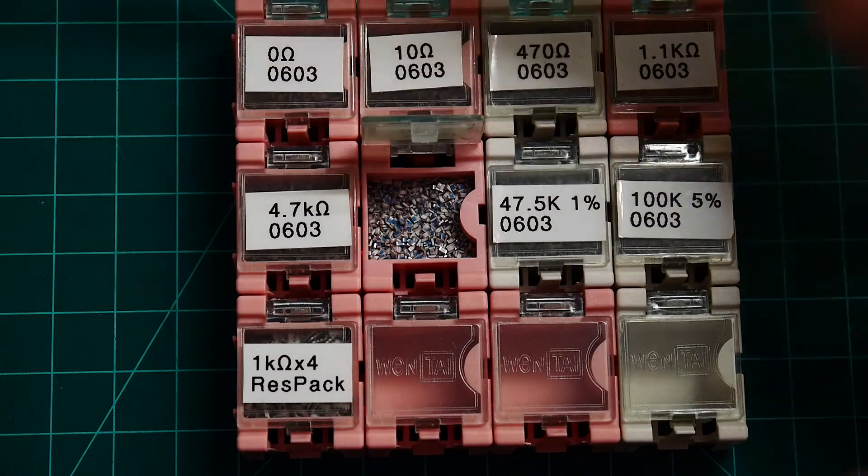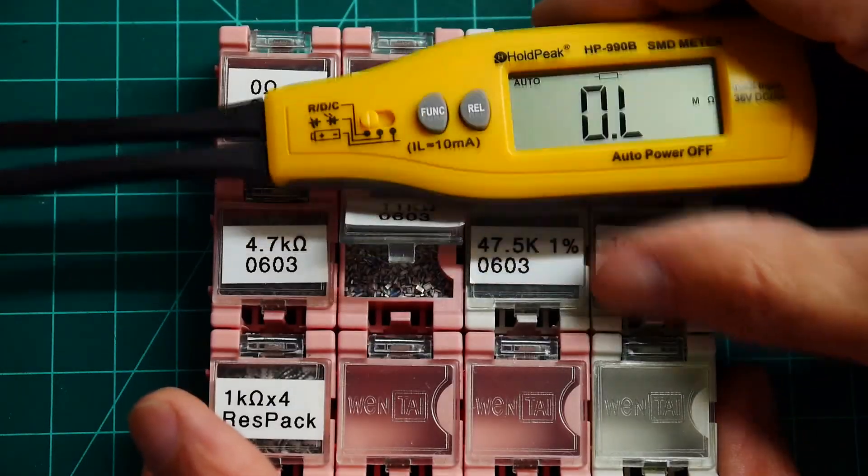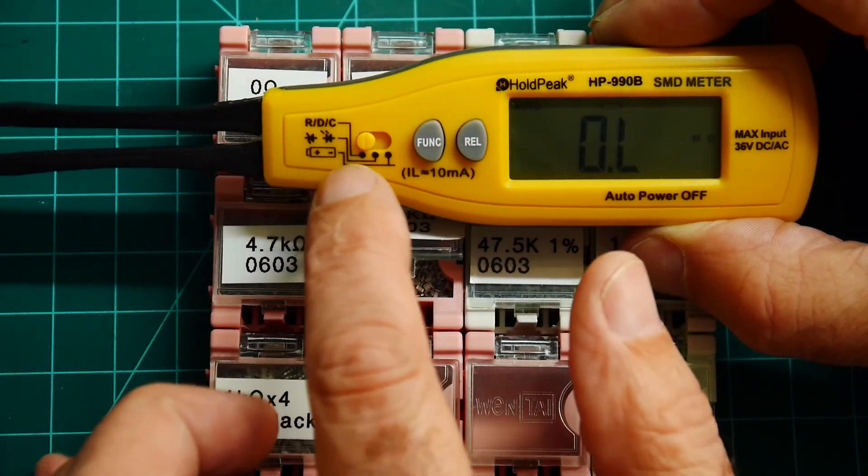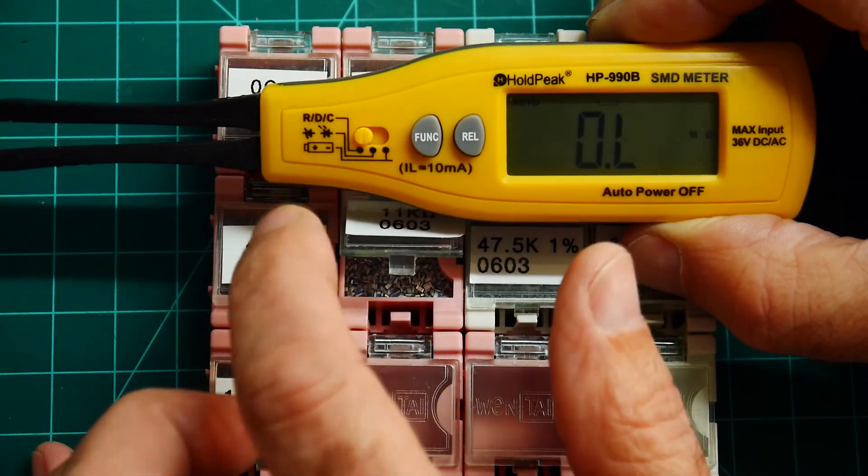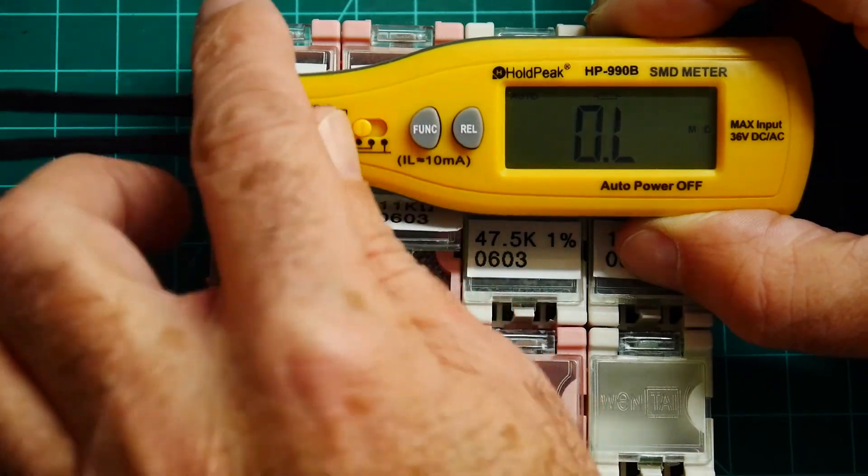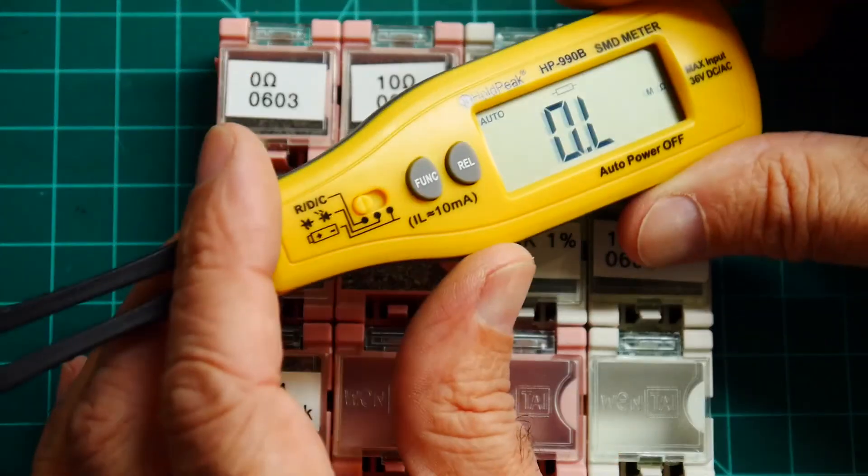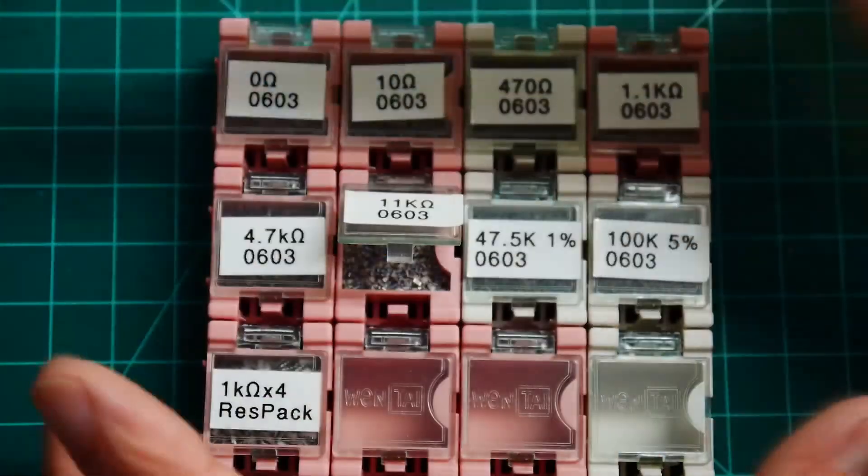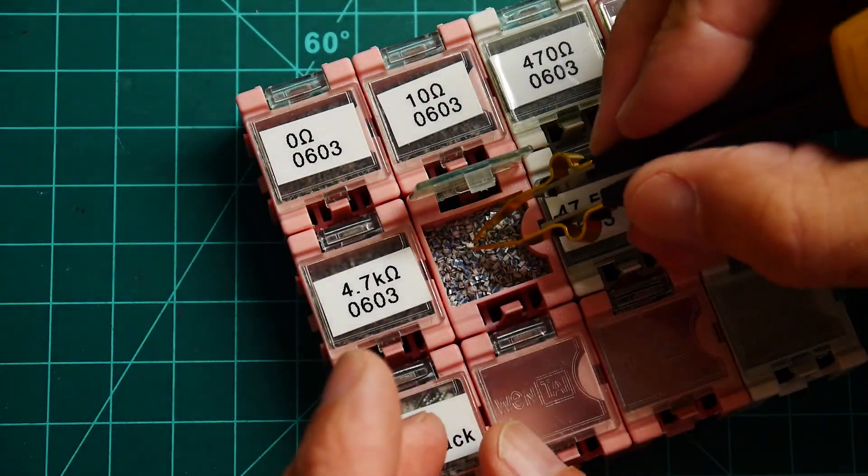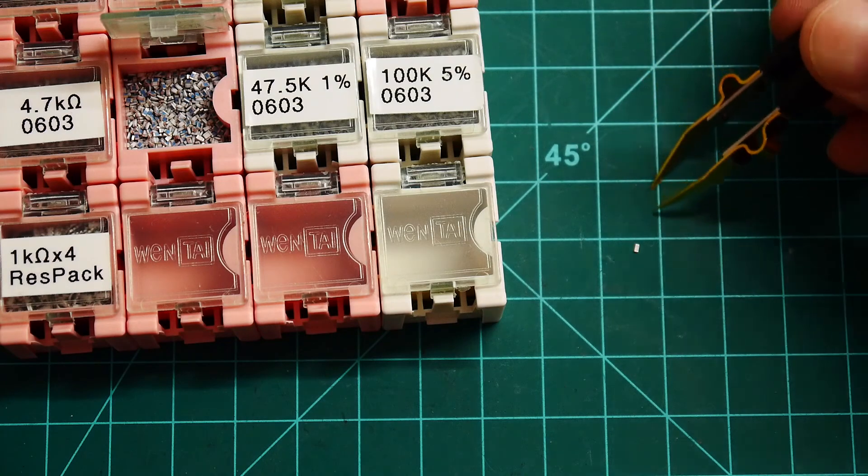We need to set the function correctly. So we have this switch here. R, D and C's, Zeners and LEDs, and batteries. So we've got it in the resistive capacitor type thing here. And then it's set to auto mode. So it should auto figure out what things are. You can also tell it to. Can you see that little thing there?